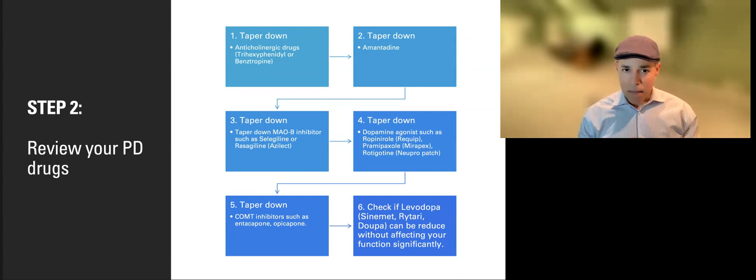The second one would be amantadine. So if you are taking amantadine and you're having hallucinations, you might need to taper down the medication. The next one will be what we call the MAO-B type inhibitors, such as selegiline or rasagiline, which is Azilect. The next one will be to taper down the dopamine agonists, for example ropinirole, which is Requip, pramipexole, which is Mirapex, or the patch that we use sometimes that might cause hallucinations.